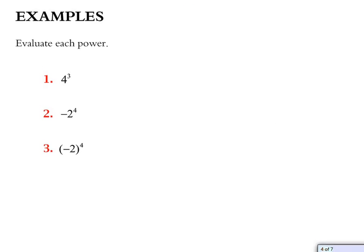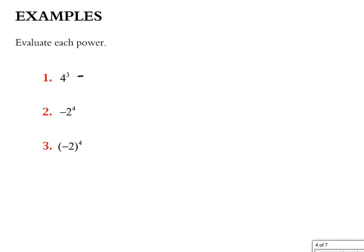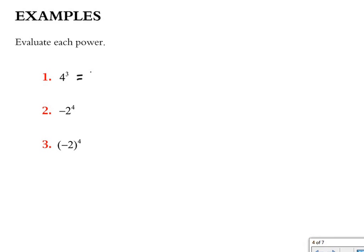For some further examples: 4 to the third power. To evaluate the power, I'll write the in-between step showing what the multiplication is, then actually do the math. 4 times 4 times 4 is 64.